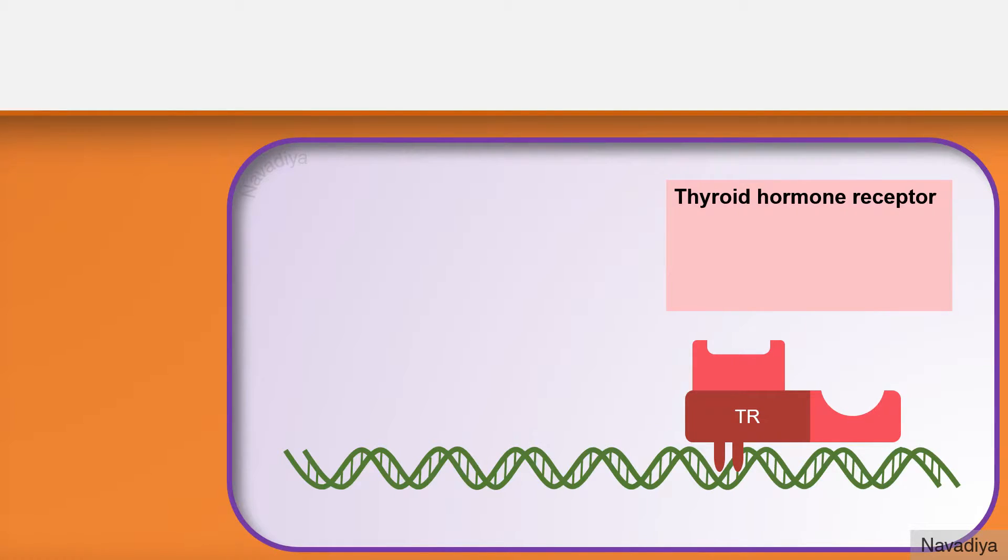Now the thyroid hormone receptor is a transcription factor. Transcription factor is basically a protein that regulates expression of genes. It has two types, alpha and beta. Different tissues express different types.